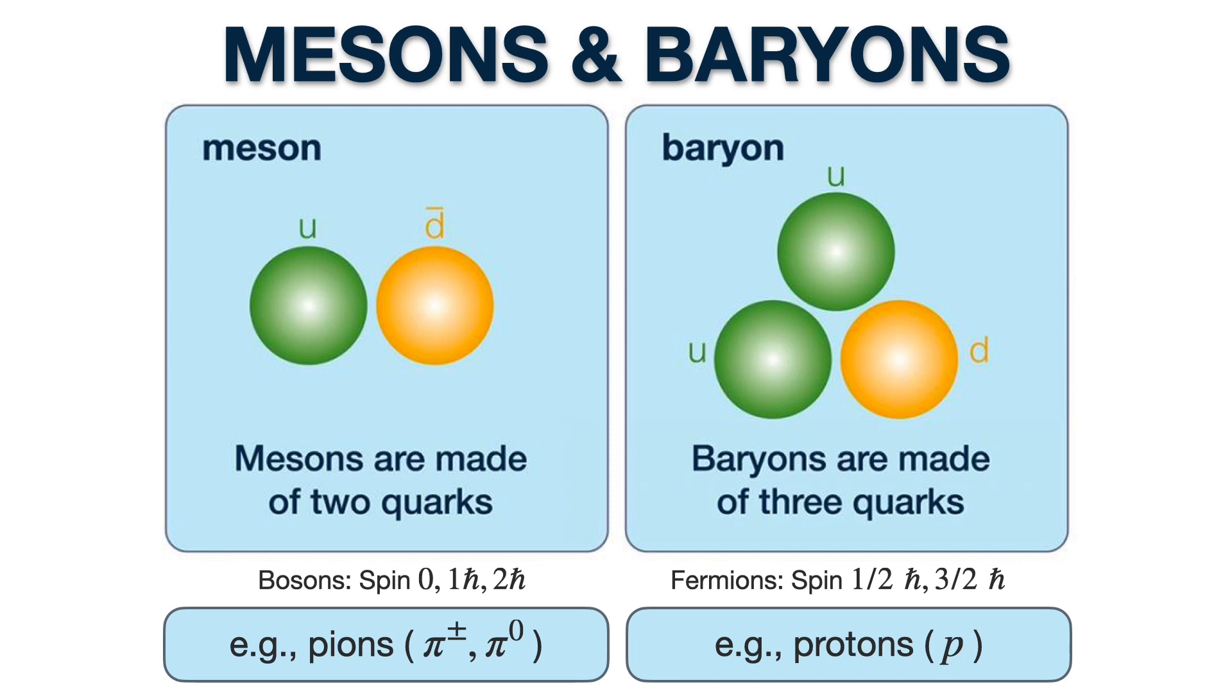Then we have baryons, which are three quark bound states. They are considered fermions, meaning that they have fractional spin. For example, the proton and a neutron.